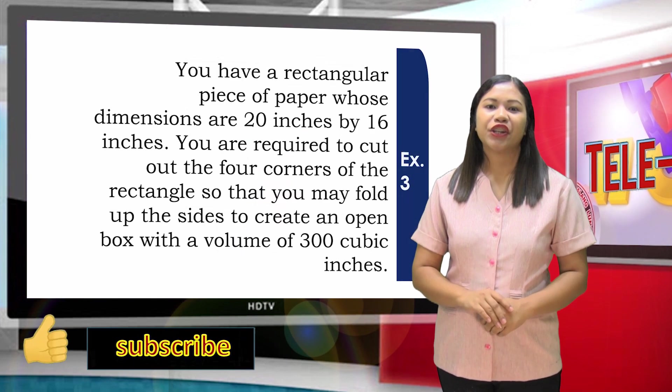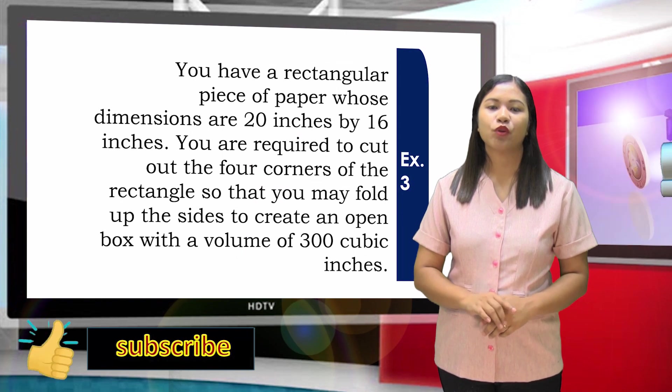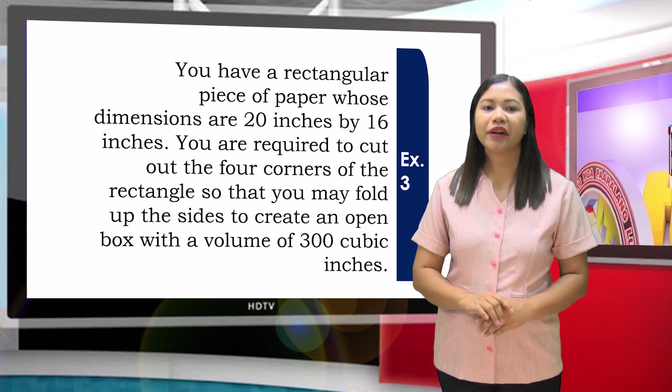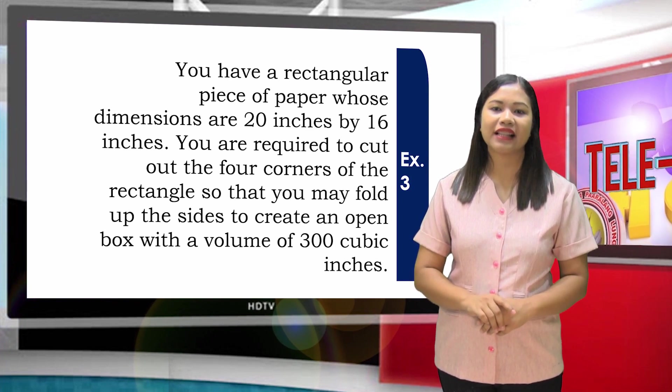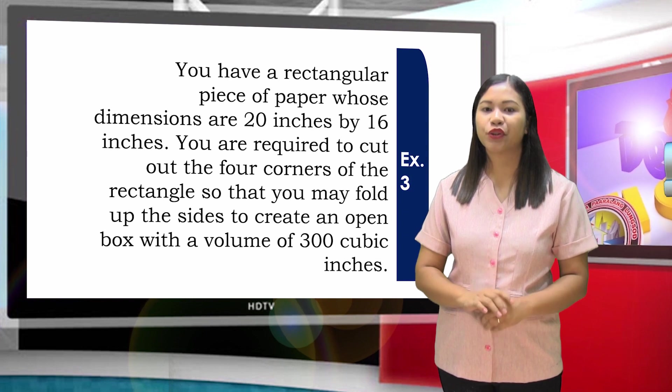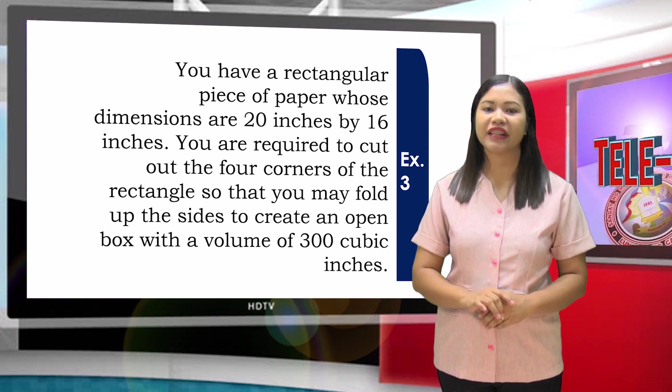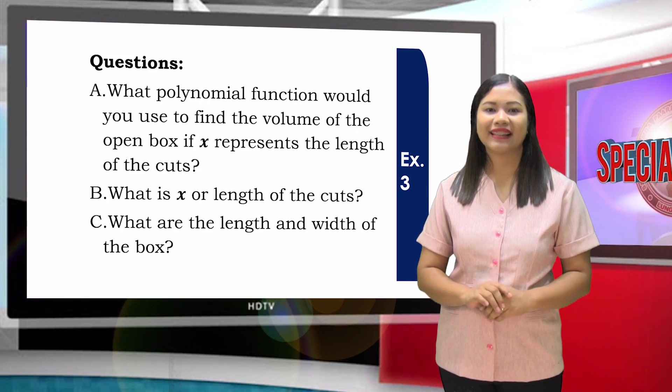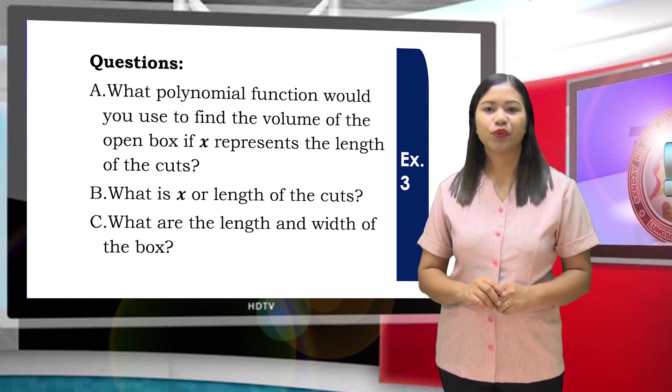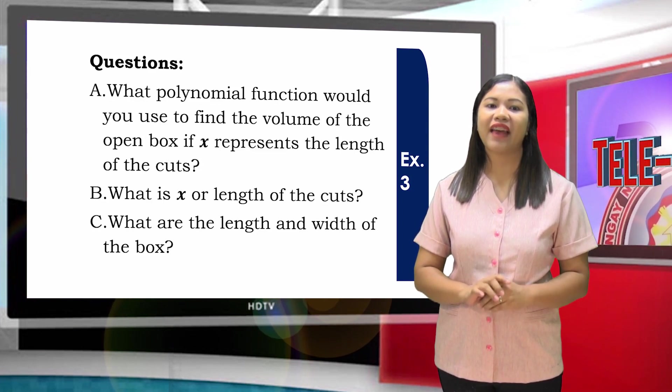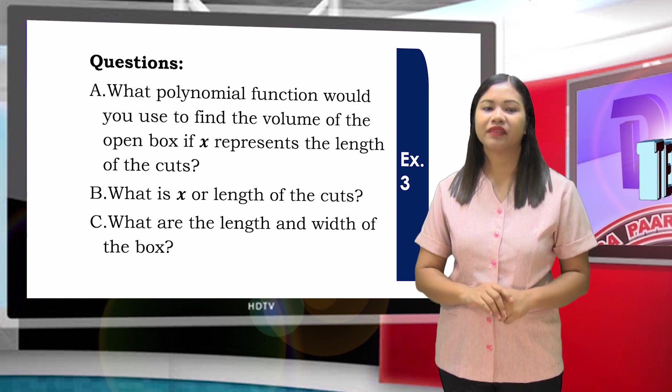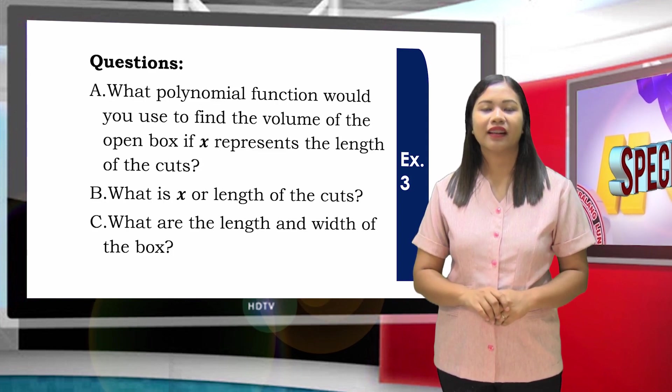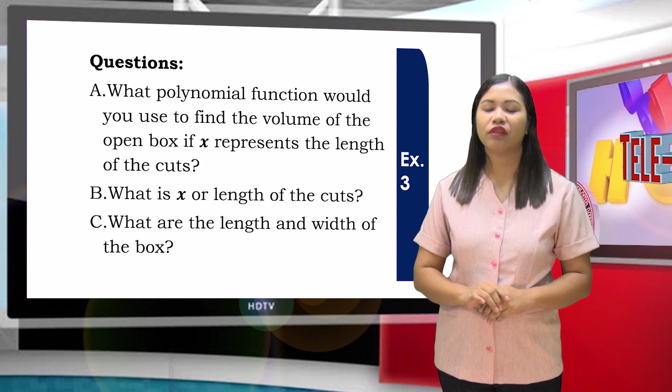Example number 3: You have a rectangular piece of paper whose dimensions are 20 inches by 16 inches. You are required to cut out the four corners of the rectangle so that you may fold up the sides to create an open box with a volume of 300 cubic inches. These are the questions. Letter A: What polynomial function would you use to find the volume of the open box if X represents the length of the cuts? Letter B: What is X, or the length of the cuts? And letter C: What are the length and width of the box?